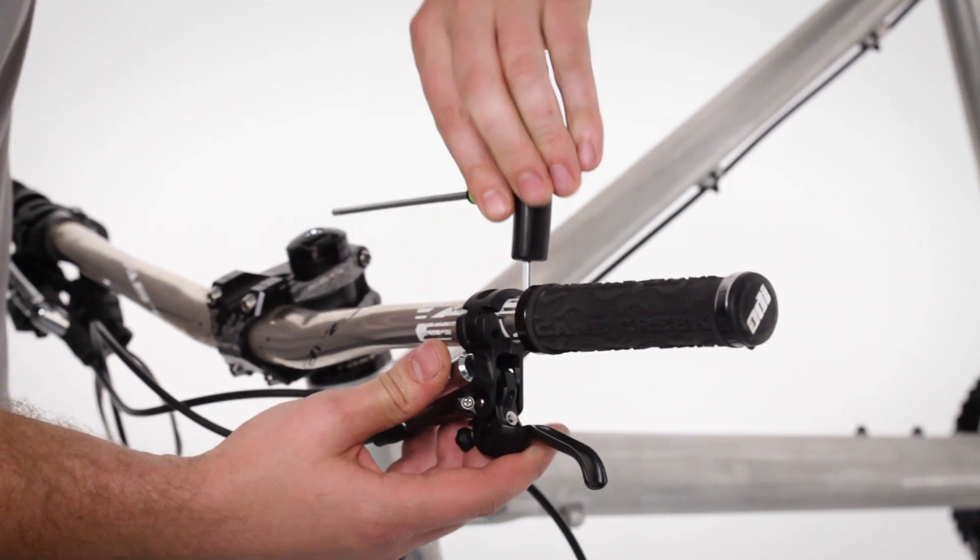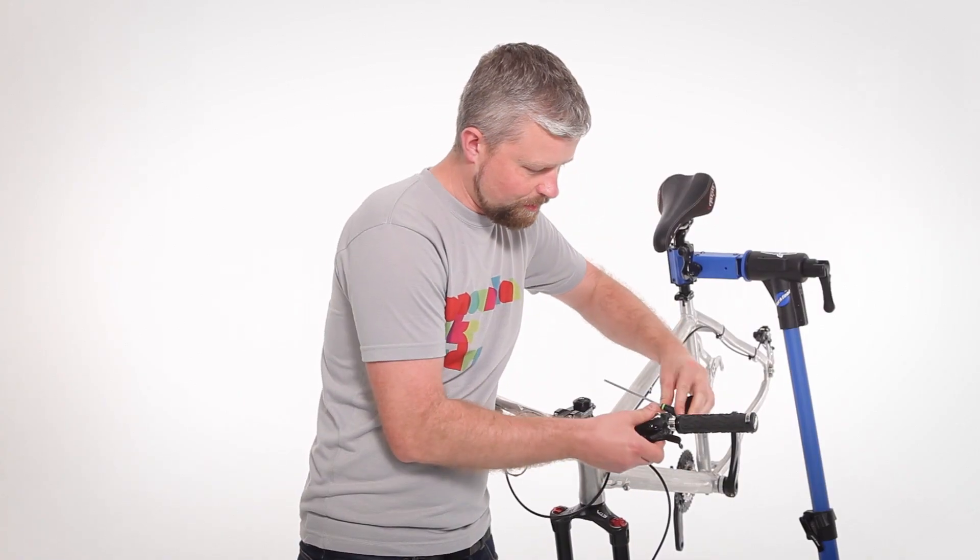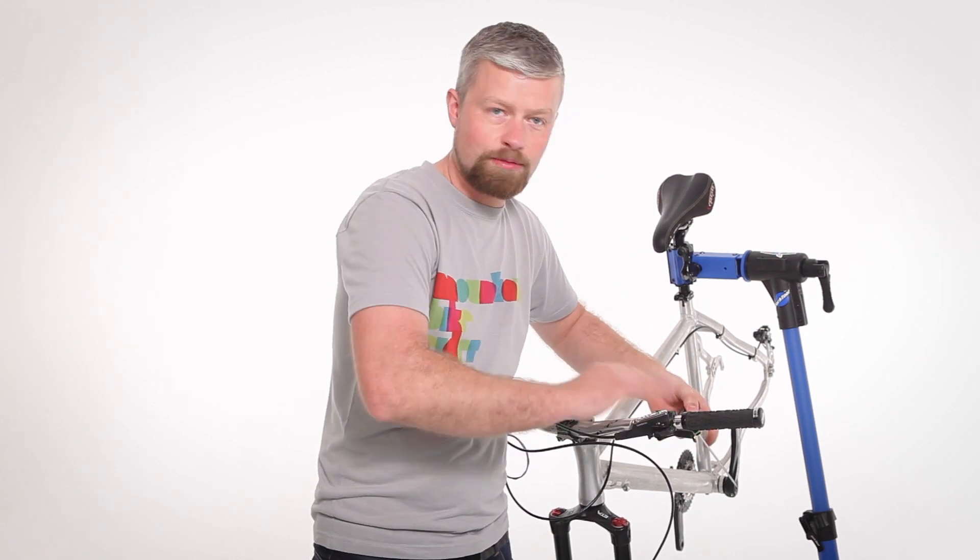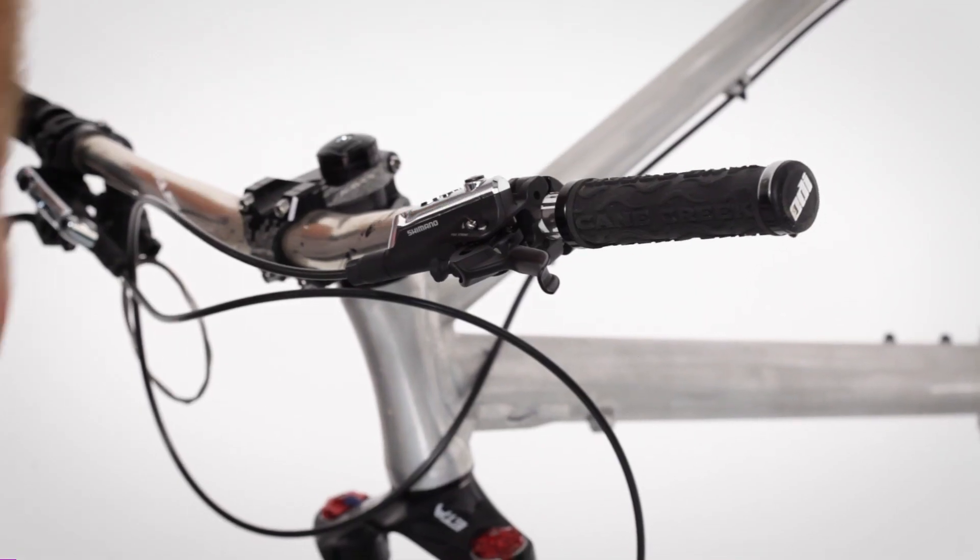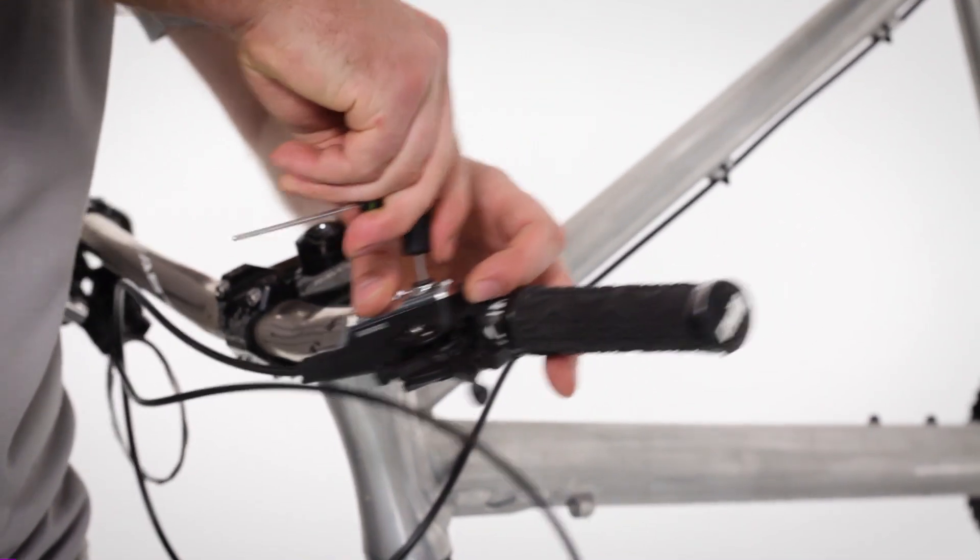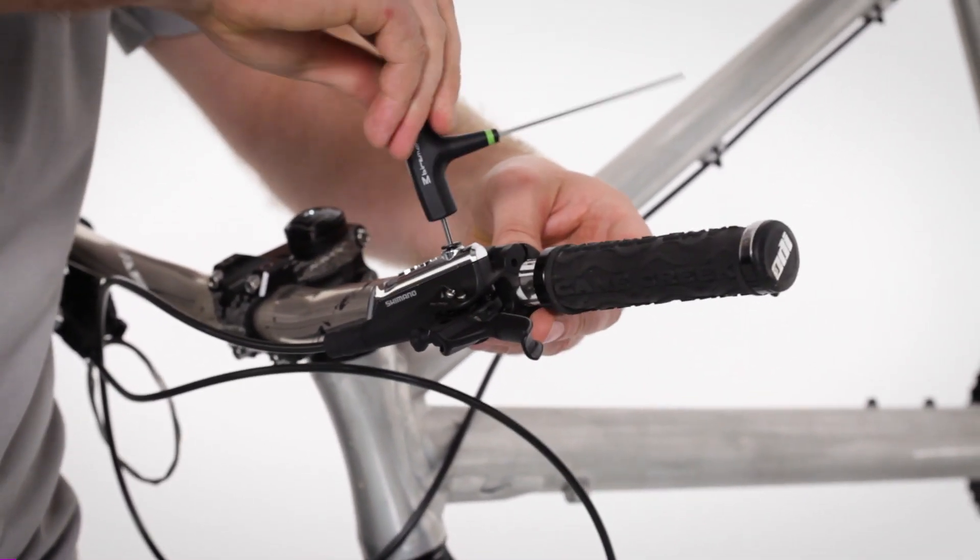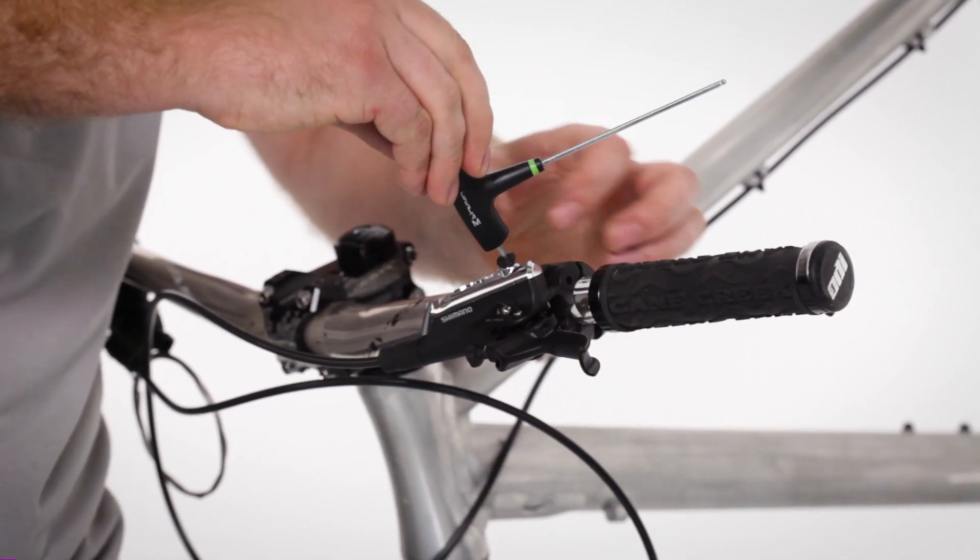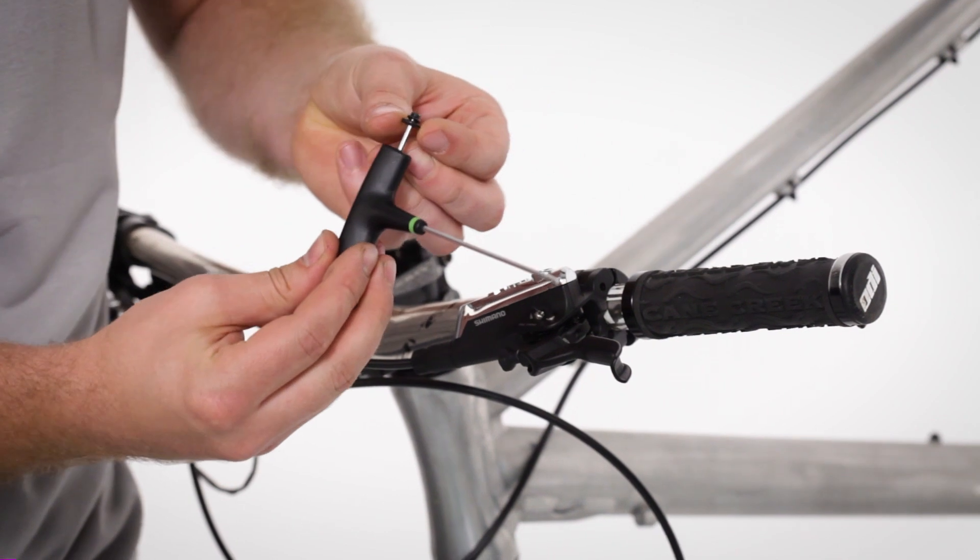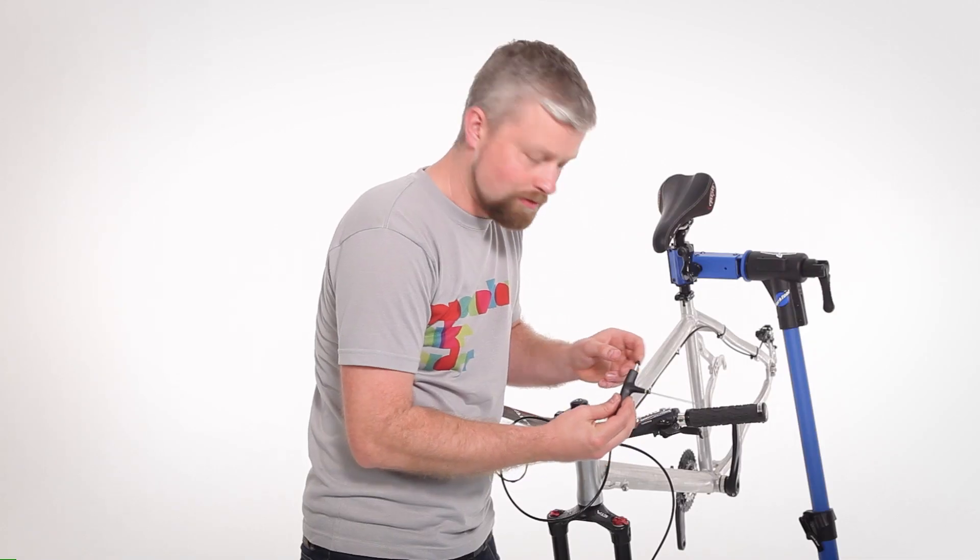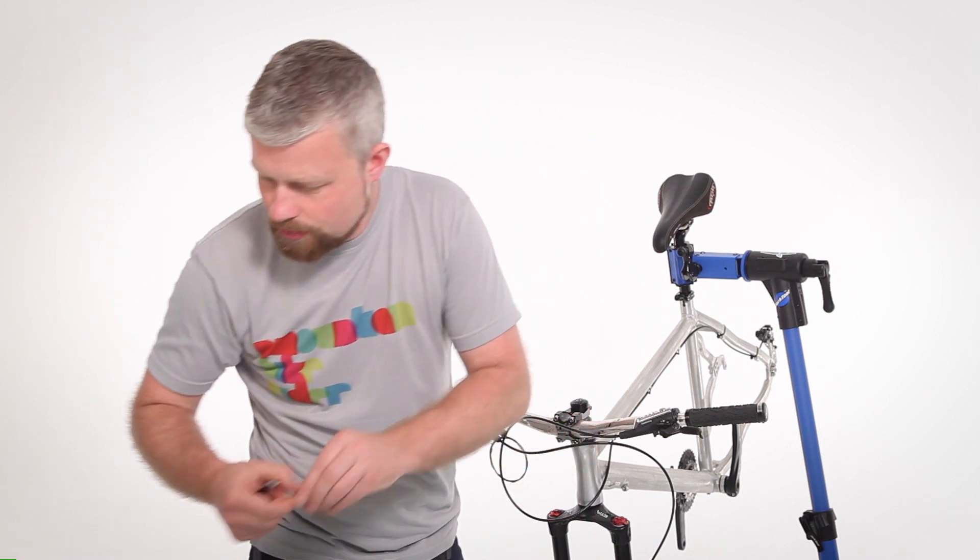Just the lever end. Undo the clamp and position the lever to pretty much level with the floor. Grab a 2.5mm Allen key and crack open the bleed port. Remove the screw. Make sure you've got the little O-ring on the screw as well.